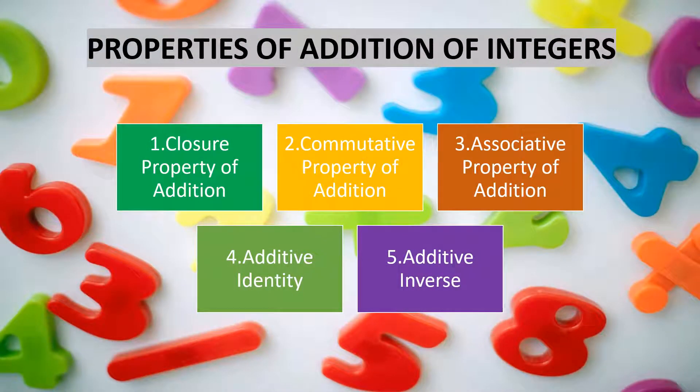There are five main properties of addition of integers. First, closure property of addition. Second, commutative property of addition. Third, associative property of addition. Fourth, additive identity. And fifth, additive inverse.